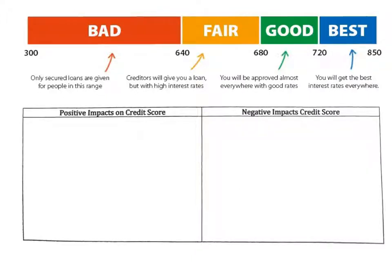Now let's talk about the range of credit scores. 300 is the lowest and 850 is the highest. In the bad range around 364, only secured loans are given. From 640 to 680, creditors will give a loan but interest rates will be very high. From 680 to 720, you'll be approved for almost all loans with pretty good rates. From 720 to 850, you get the best rates because lenders believe you will pay back in a timely manner.